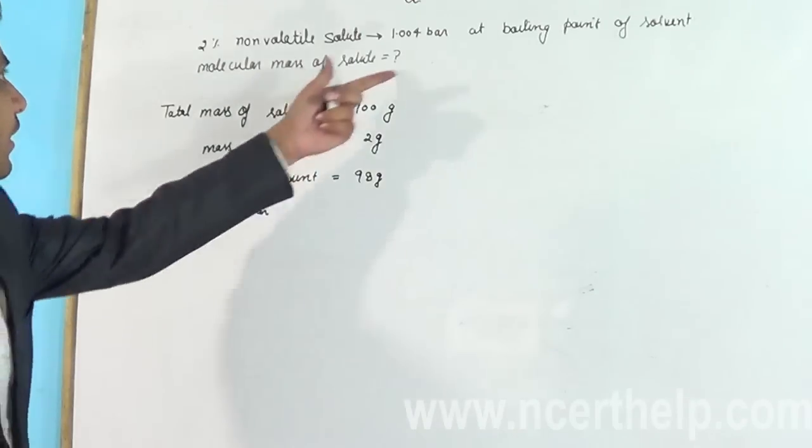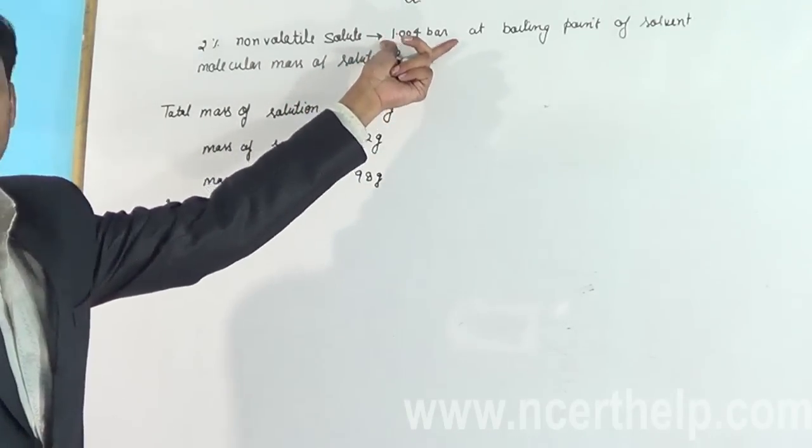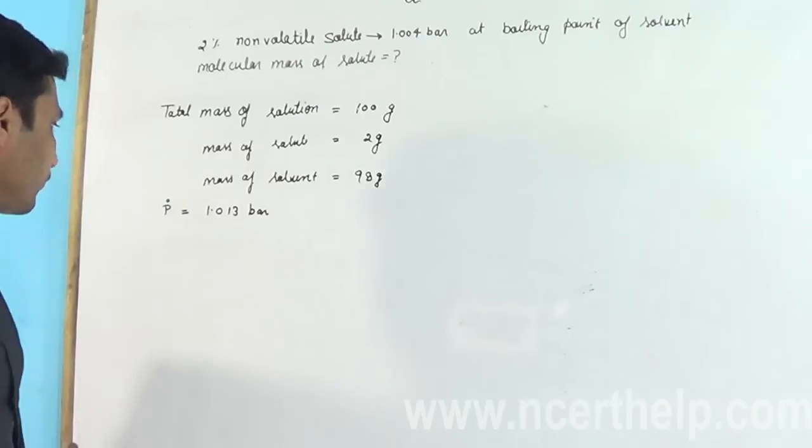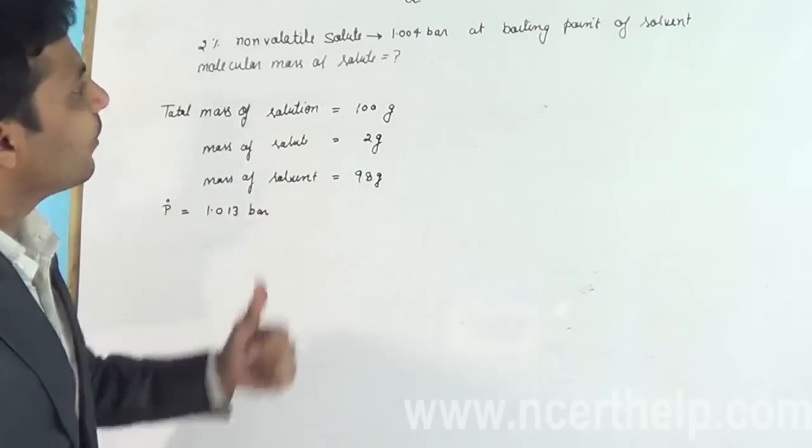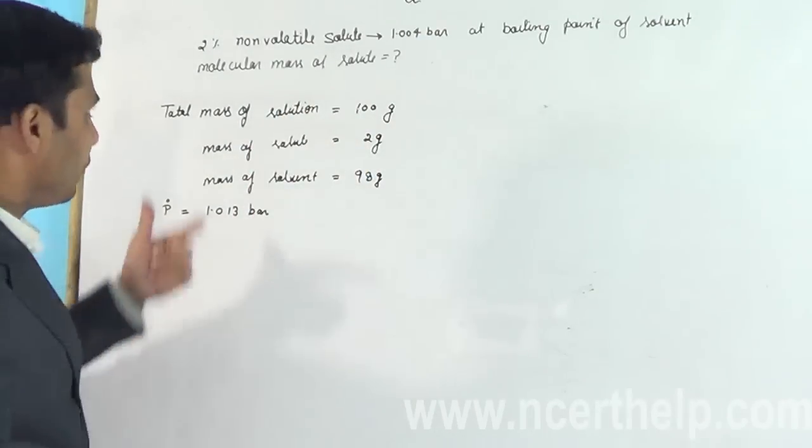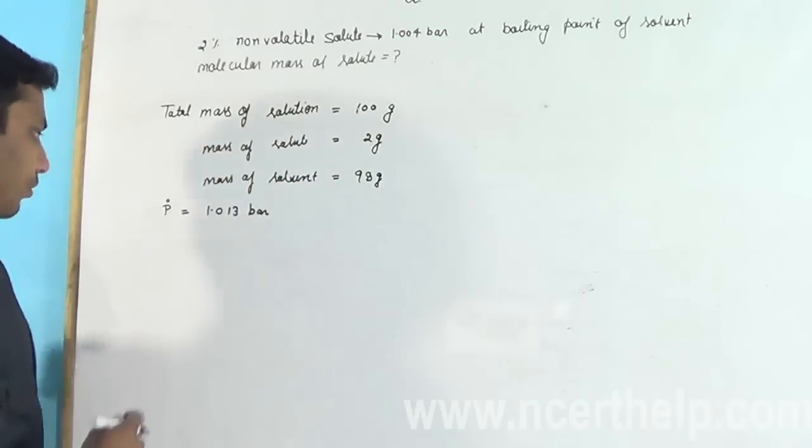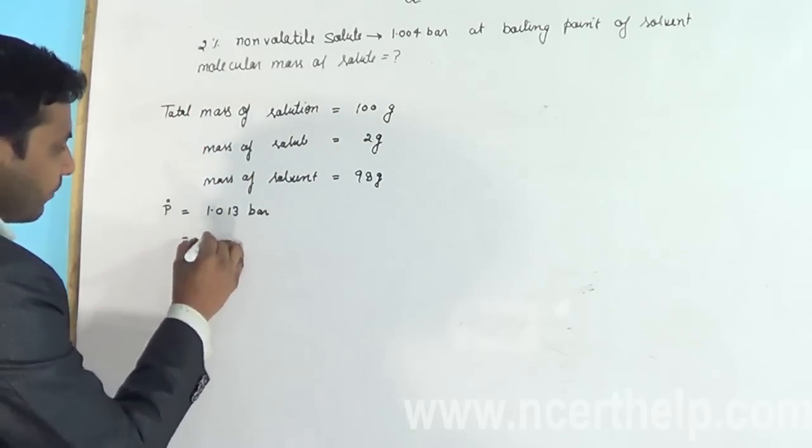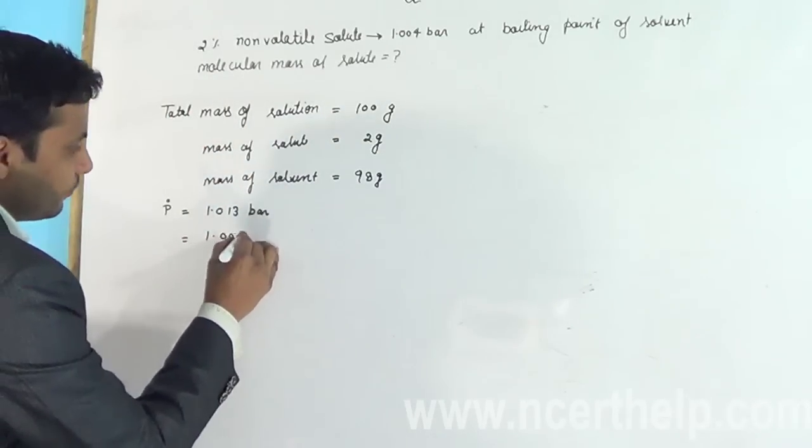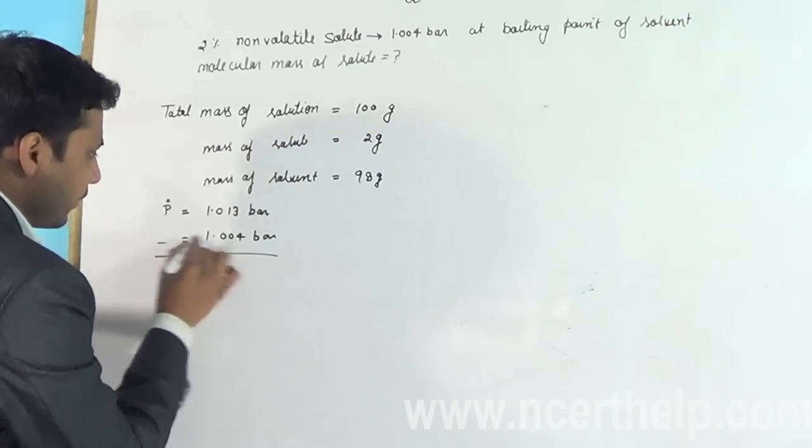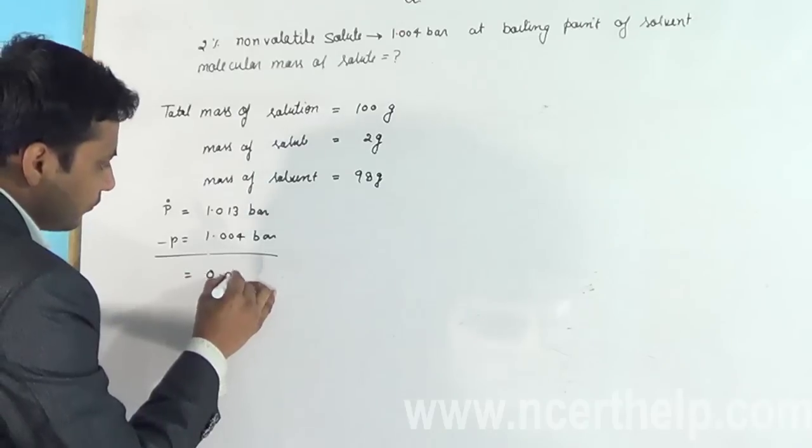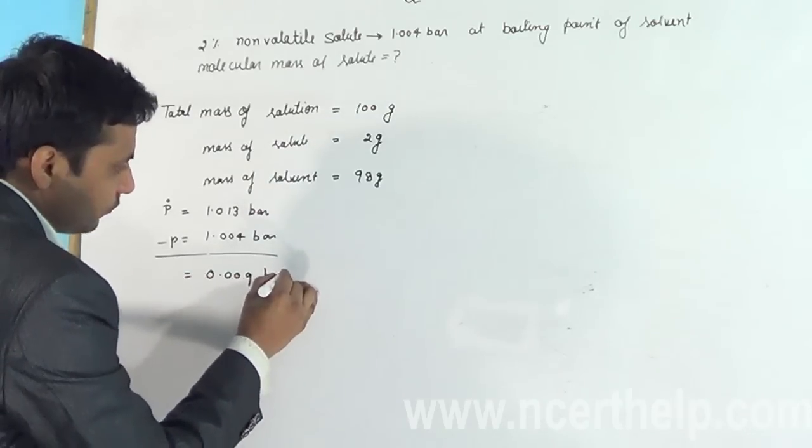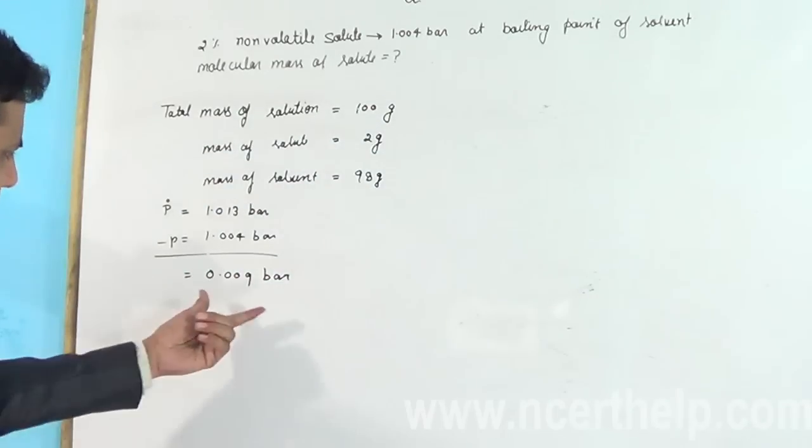So pressure of pure H2O is equal to 1.013 bar. But here this quantity is given in bar, so I'm using bar here. Now the pressure of water is 1.004 bar due to this solute, so I am subtracting this value to get the effect of this pressure decreasing due to the addition of our non-volatile solute.